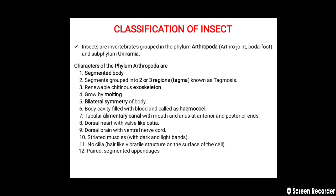The branches of entomology are: first, forensic entomology — the study and use of insects in crime investigation. Second, veterinary entomology — the study of insects related to livestock and veterinary animals. Third, medical entomology — the study of insects in relation to human beings.